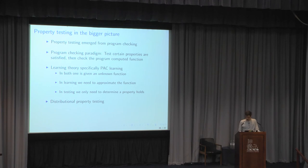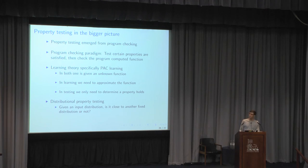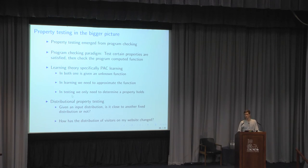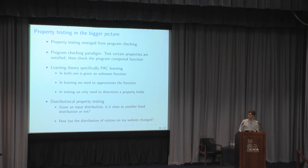One area I haven't touched on is distributional property testing. An example question would be: given an input distribution, is it close to another fixed distribution or not? Imagine you're running a website with a detailed record of the distribution of your visitors, and you change something about your website — you can test whether the distribution of visitors has changed and is still close to your old distribution. Distributional property testing will tell you with a certain probability whether that holds. One key difference from the property testing shown so far is that in distributional property testing we don't query the input but receive samples of it — again the shift from being active toward the input versus being passive and given examples.